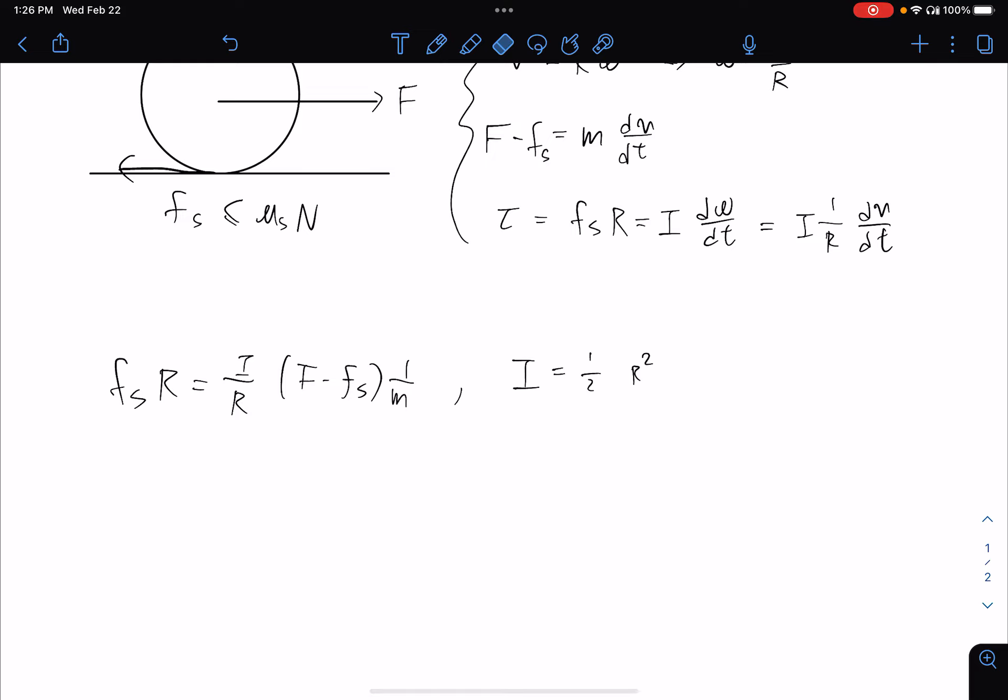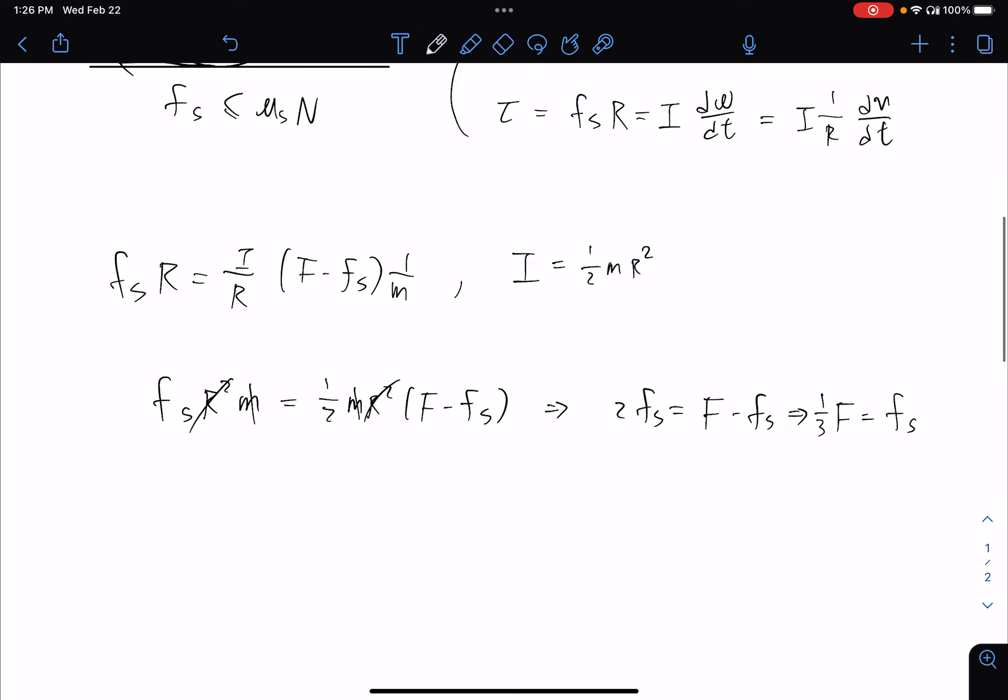We can plug that in so that we have fₛ times r over m equals 1/2 mr² times (F minus fₛ). So we can eliminate the mr² and then we get 2fₛ equals F minus fₛ. F equals 3fₛ, or in the other words the static friction down there will be a third of the force we pull.